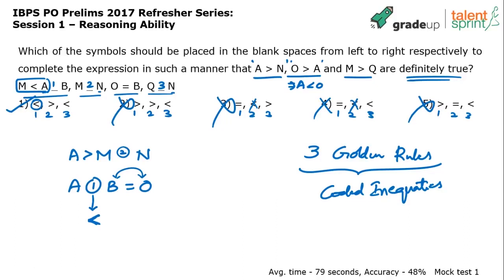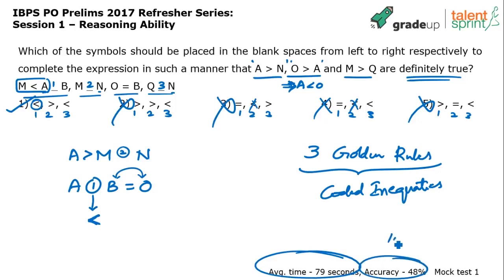This explanation takes time because I'm writing it out, but when you do it mentally you should crack this in about 15 to 20 seconds maximum. So why is the average time 79 seconds and accuracy only 48%? You should achieve 100% accuracy in about 20 seconds — even checking the first and second expressions should take no more than 20 seconds. Four times the required time is being spent and only half are getting it right. Be careful — you cannot go wrong on such simple ones. Option one is the final correct answer.